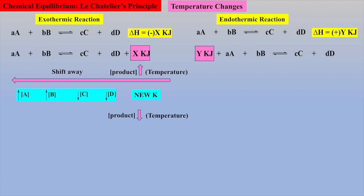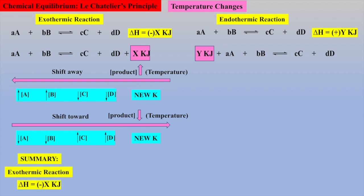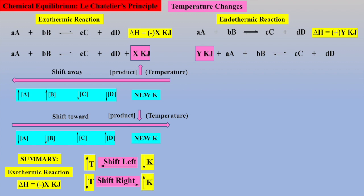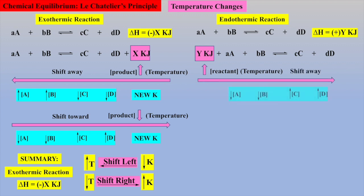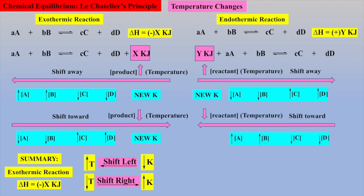Conversely, we could lower the temperature — which equates to a removal of energy — and the shift will be toward the loss of energy, yielding new equilibrium concentrations and a new equilibrium constant for the lower temperature. Thus, for an exothermic reaction: if temperature is increased, there will be a shift to the left and a new smaller equilibrium constant will be obtained; if temperature is decreased, there will be a shift to the right and a new larger equilibrium constant will be obtained. For an endothermic reaction: if temperature is increased, there will be a shift to the right and a new larger equilibrium constant will be obtained; if temperature is decreased, there will be a shift to the left and a new smaller equilibrium constant will be obtained.